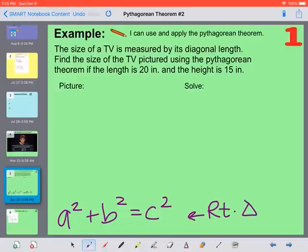It says the size of a TV is measured by its diagonal length. This is true. Find the size of the TV pictured using the Pythagorean Theorem if the length is 20 inches and the height is 15. So there is no picture, we need to draw a picture.